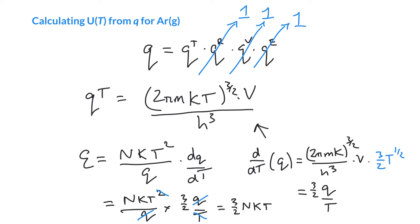The number of particles — if we pick Avogadro's number N_A and multiply Avogadro's number by the Boltzmann constant, that's just the gas constant R. So the energy is 3/2 RT on a molar basis.